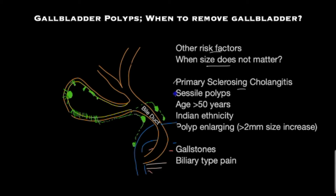If the gallbladder polyp is found to be sessile — that is, a flat polyp unlike a pedunculated polyp which has a stalk — and if this sessile polyp is 4 millimeters or greater, these should mandate removal of the gallbladder.